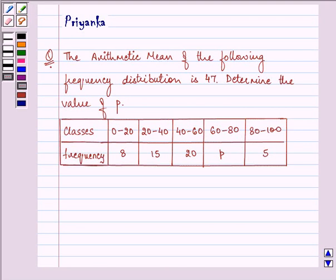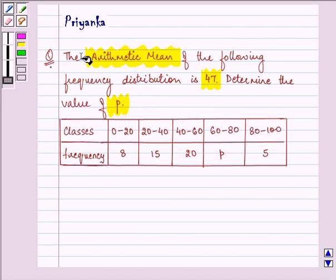Hello and how are you all doing today? The question says the arithmetic mean of the following frequency distribution is 47. Determine the value of P.